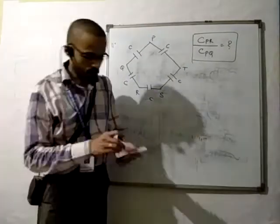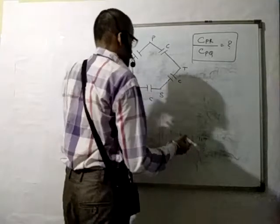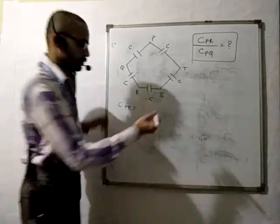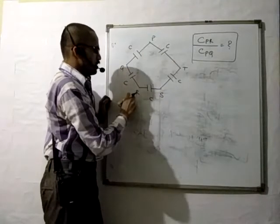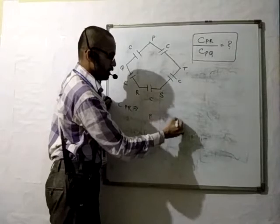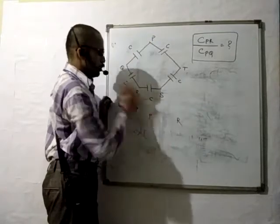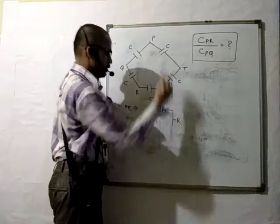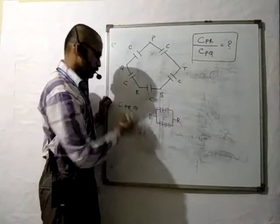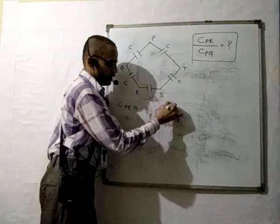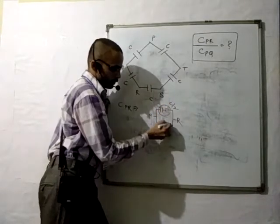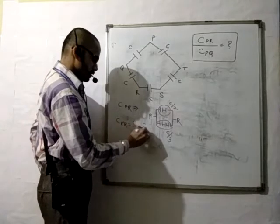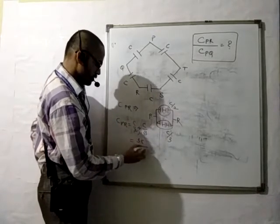Let us solve now. For C(PR) — between P and R — the diagram shows 2 capacitors in one branch and 3 in another. Two capacitors in series give C/2, and three in series give C/3. So C(PR) = C/2 + C/3 = 5C/6.